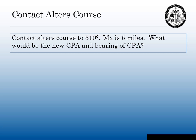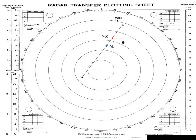So far in our plotting, our own ship is the one that's been changing course or changing speed. What happens if the contact changes course or changes speed? In this example, the contact alters course to 310 degrees. MX is 5 nautical miles. What would be the new CPA and bearing?